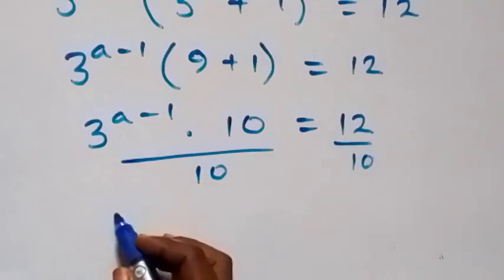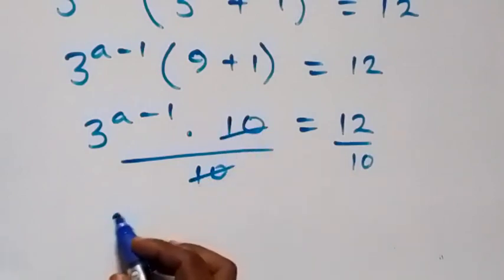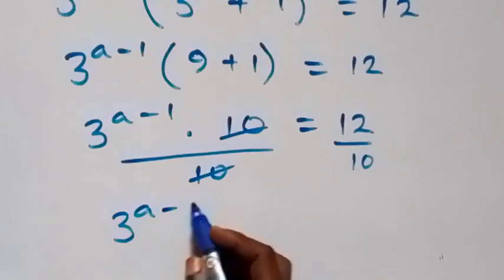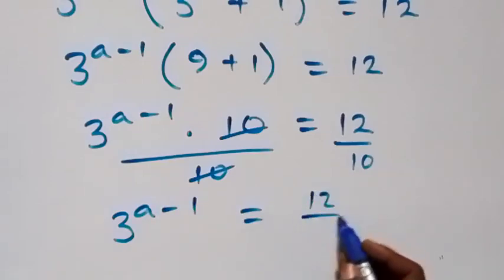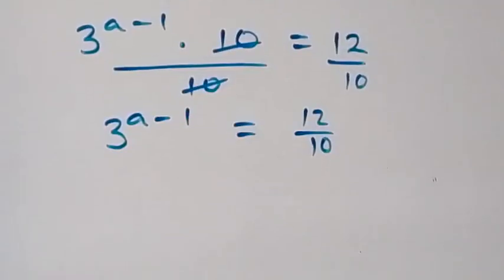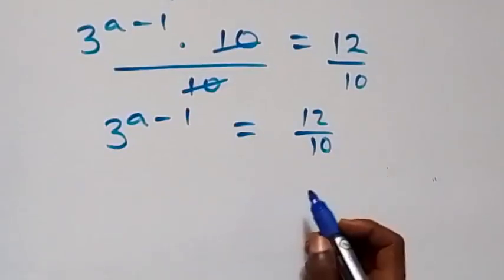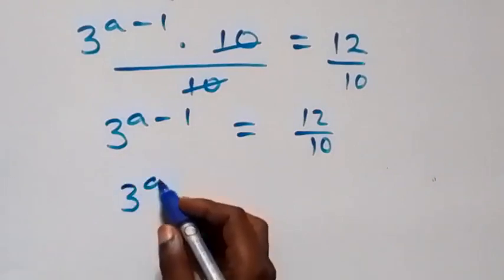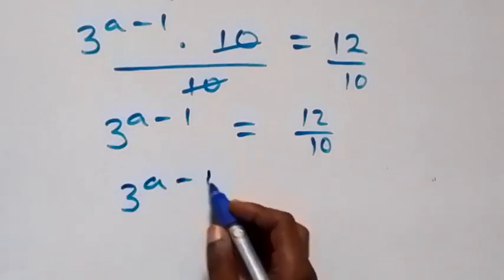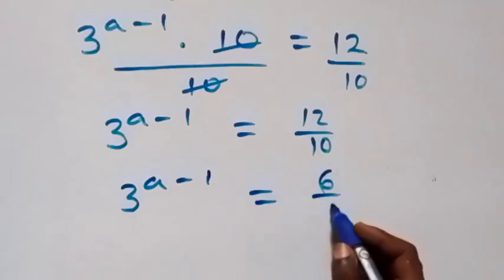Then, what we have becomes — here 10 cancels — so we have 3 raised to power a minus 1 now equals 12 over 10. We can also reduce this fraction: 2 divides both, giving us 3 raised to power a minus 1 equals 6 over 5.